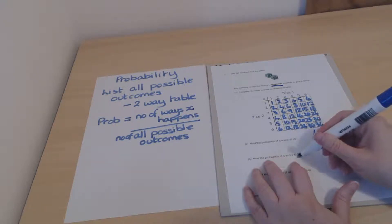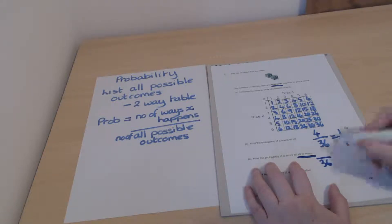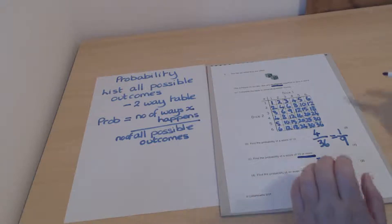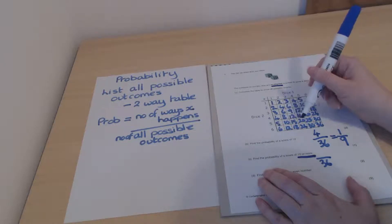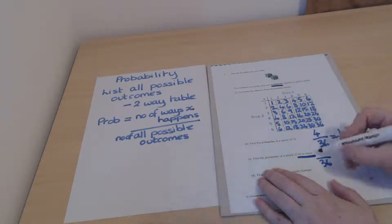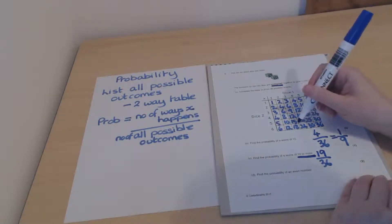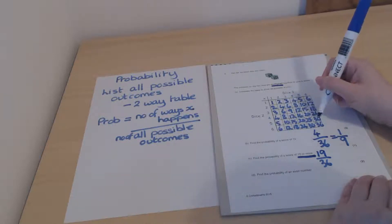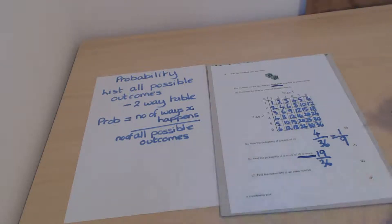The next question asks for the probability of a score of 10 or more, meaning 10 is included. It's still out of 36. Counting all values 10 or above in the table gives 19 — double-checking by counting again confirms 19. So the probability is 19/36, which won't simplify.